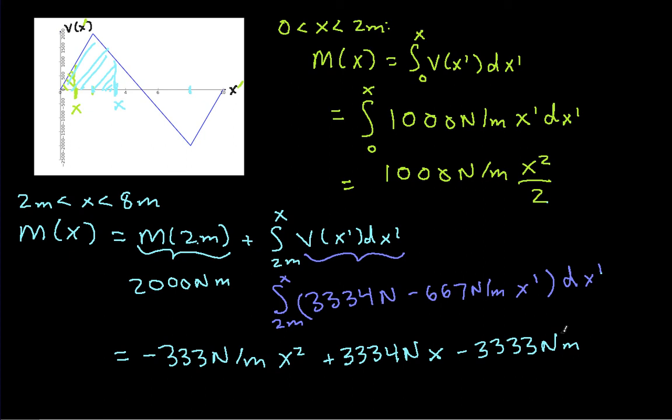So that's what we have then for x between 2 meters and 8 meters. That gives us M(x). And you can see this line here is a straight line. So what we end up here is the equation of a parabola, which is what you'd expect if you integrate a function that represents a straight line.